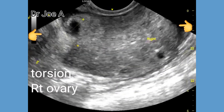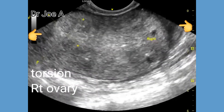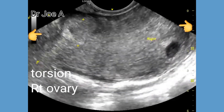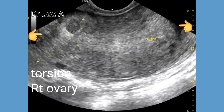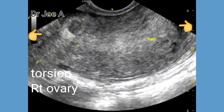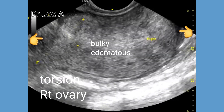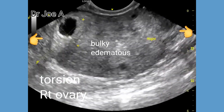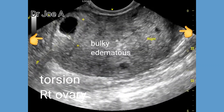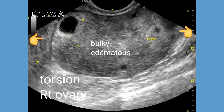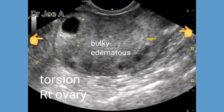The right ovary shows edematous parenchyma, seen as inhomogeneous hypoechoic ecotexture. The right ovary also shows multiple peripheral follicles, which are pushed to the periphery of the right ovary due to edema.